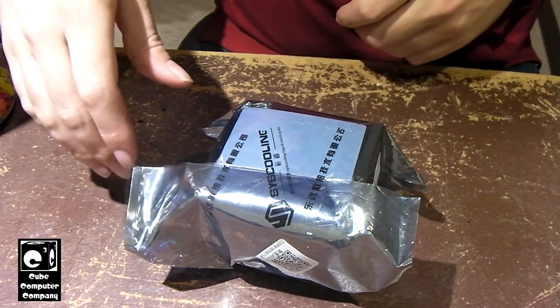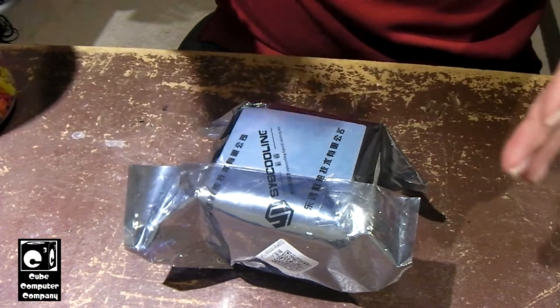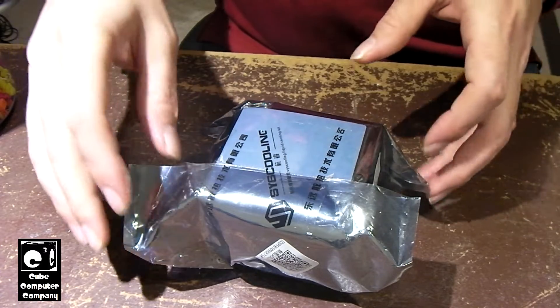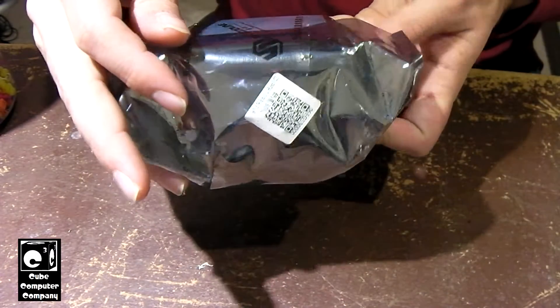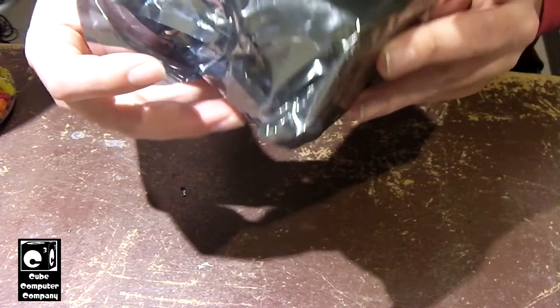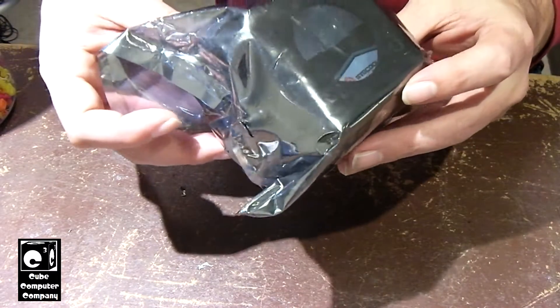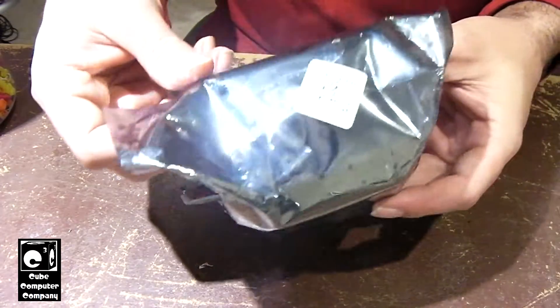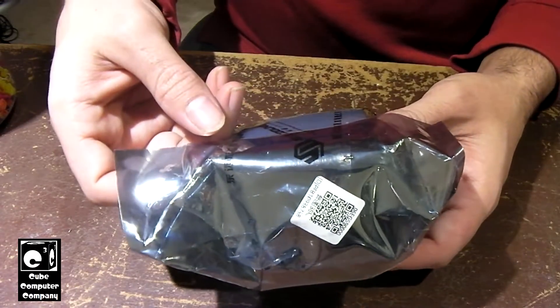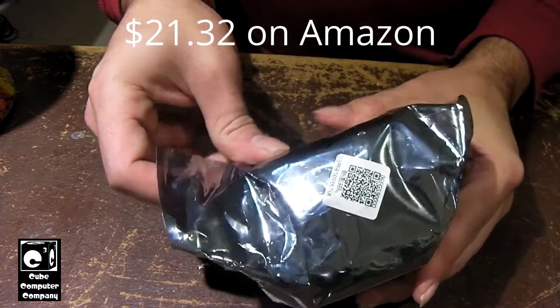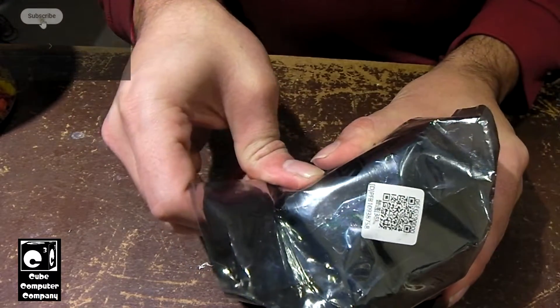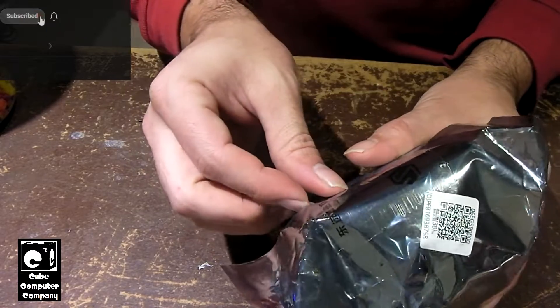so in this video we're doing an unboxing or unpacking of a product. Here we have a SIS Cooling SC300 water pump with integrated reservoir. Picked this up on Amazon for not a whole lot. Bought this for something I'm planning on doing here pretty soon on the channel.